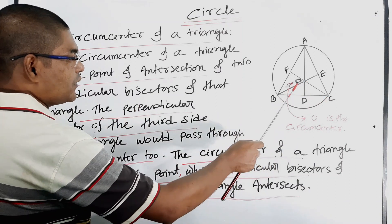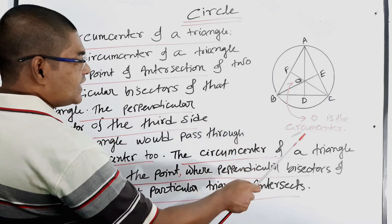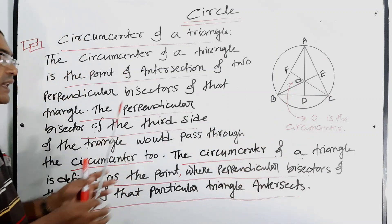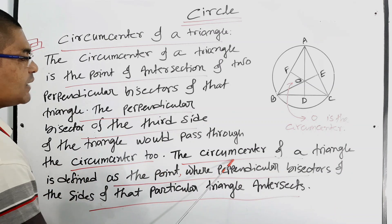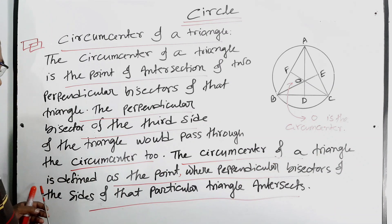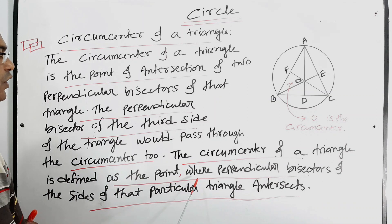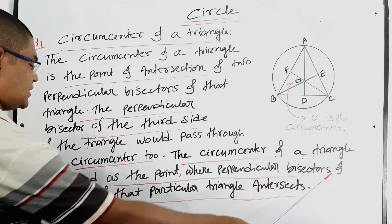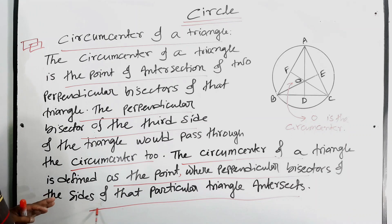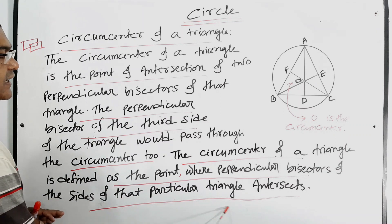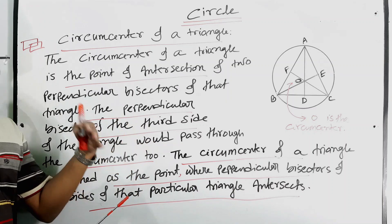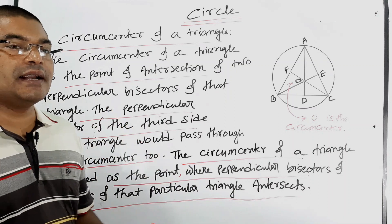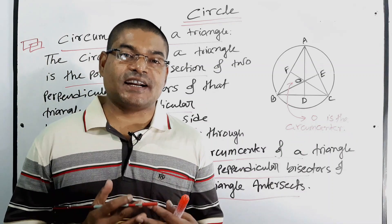So O is the circum center. Another definition: the circum center of a triangle is the point where the perpendicular bisectors of the sides of that triangle intersect. Now we will have to know the definition of ortho center.